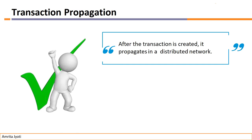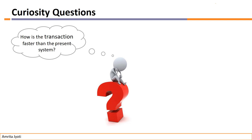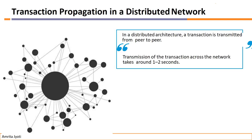In the previous video we already discussed how a transaction is initiated. After the transaction is created, it propagates in a distributed network. But how can you say that this transaction is faster than the current system? After the transaction is created, transaction propagation happens in a distributed network. In a distributed architecture, a transaction is transmitted from peer to peer.